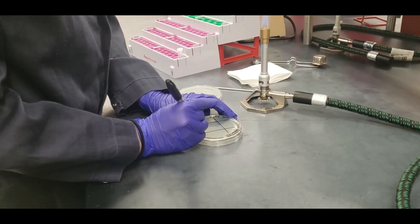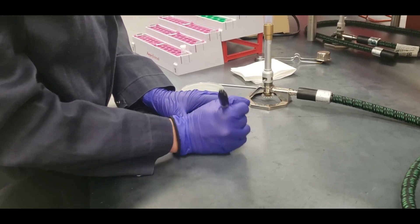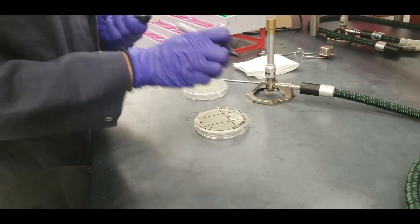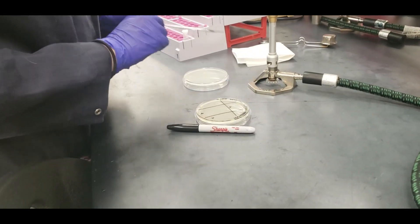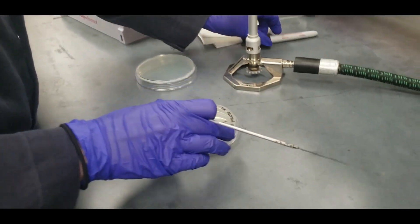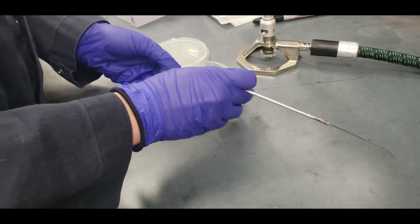So label your quadrants one, two, three, and four. And you're going to repeat the same steps like you did for making your three-quadrant plate.